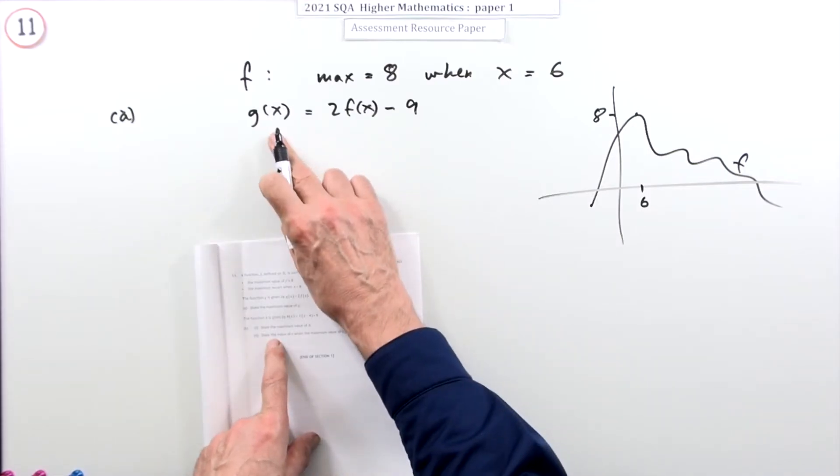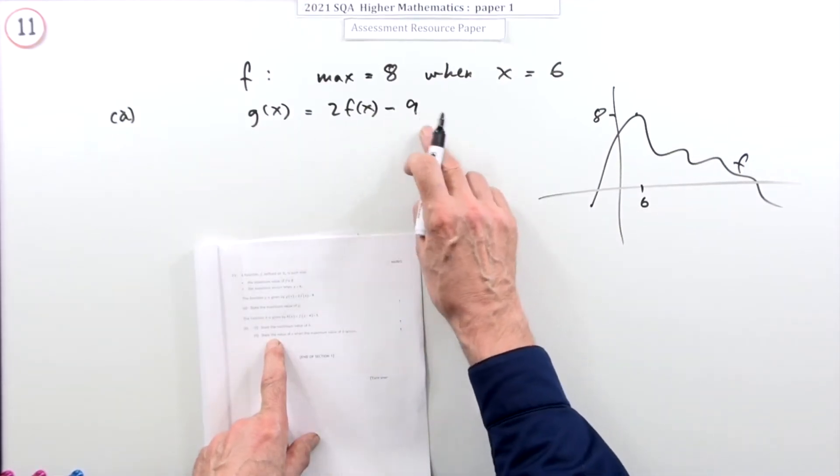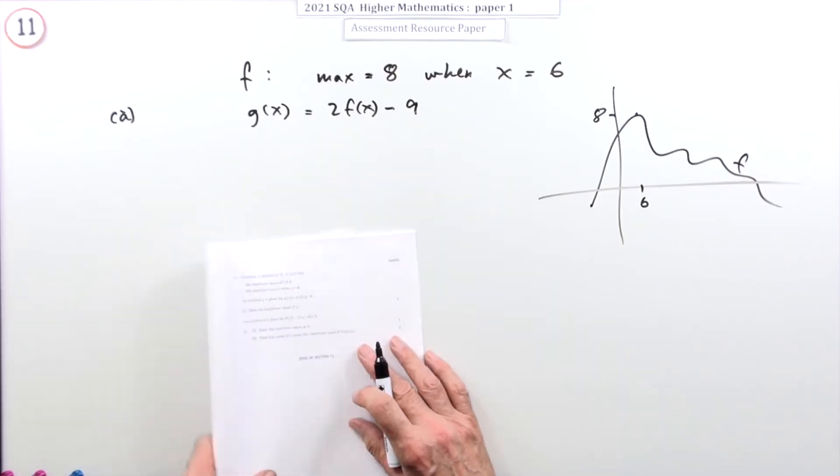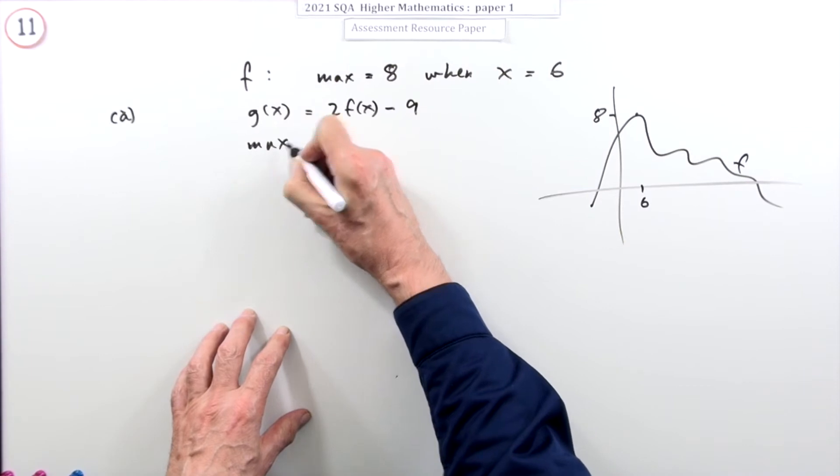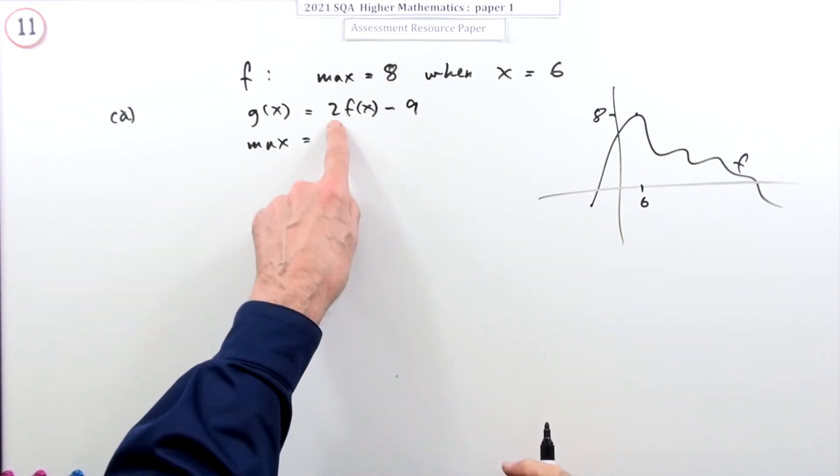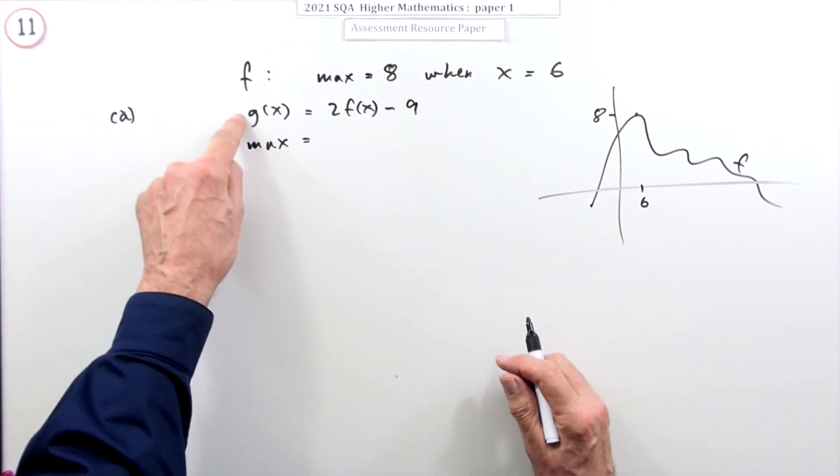So what about this new function g, 2f(x) - 9? It just says what's the maximum value. What that says is to calculate the values of the new one, you do two times the values of the old one.